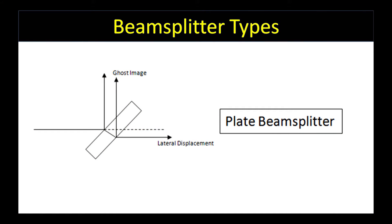Disadvantages of the plate beam splitter are the ghost images produced by having light reflect off both surfaces of the glass, lateral displacement of the beam due to the thickness of the glass, difficulty to mount without deformation, and their sensitivity to polarized light, which I'll discuss later.